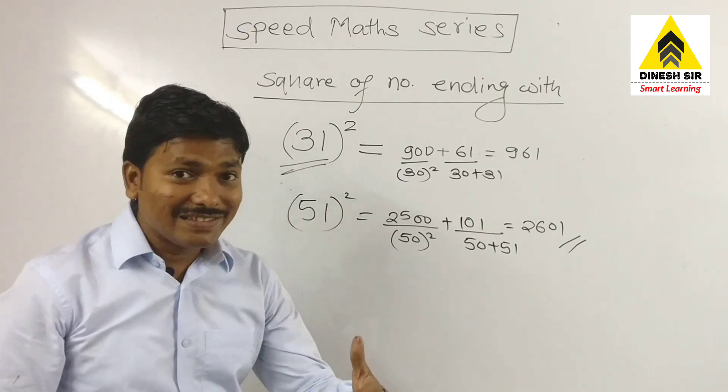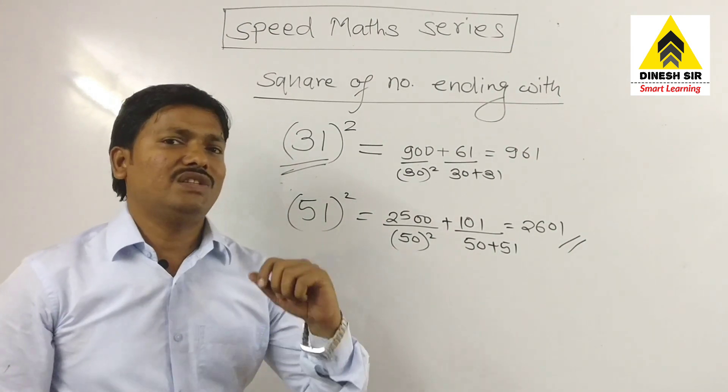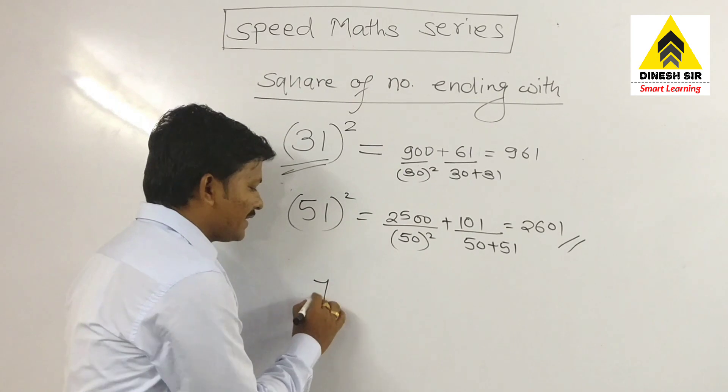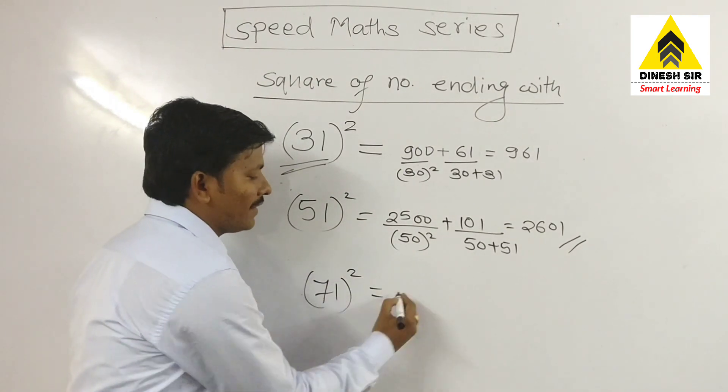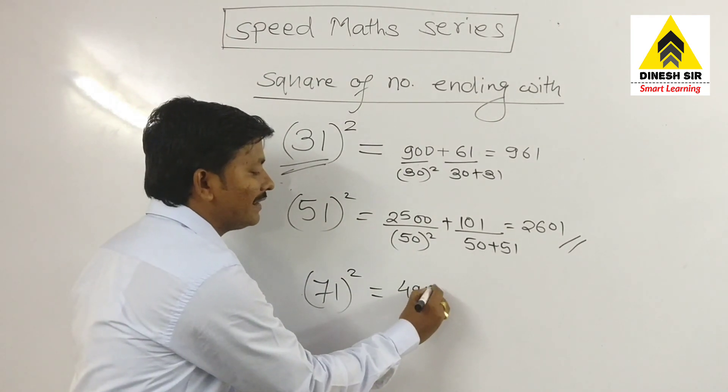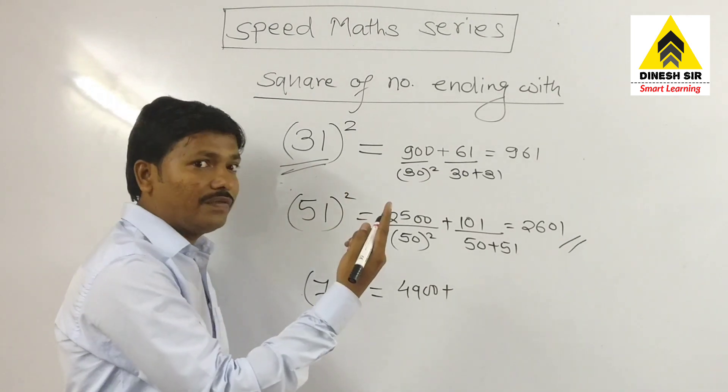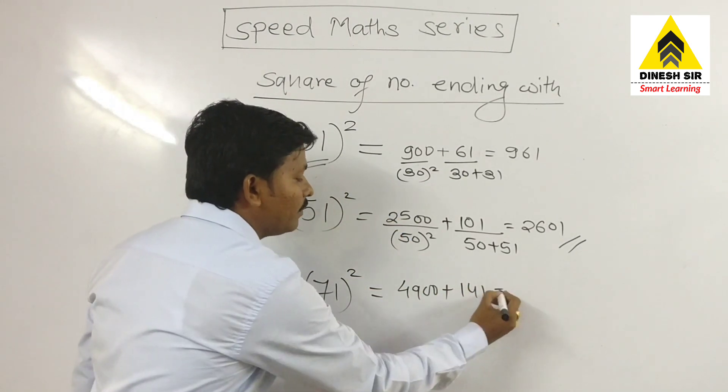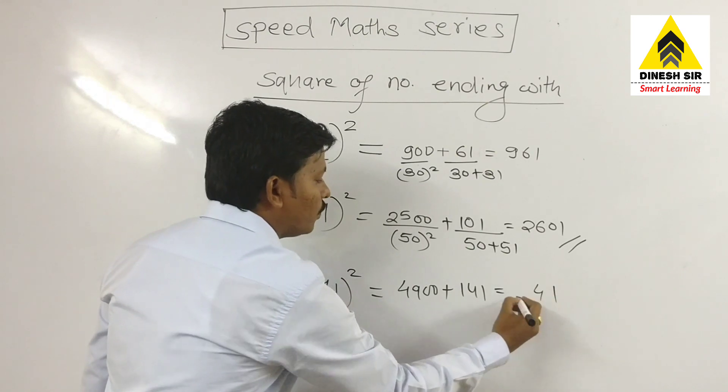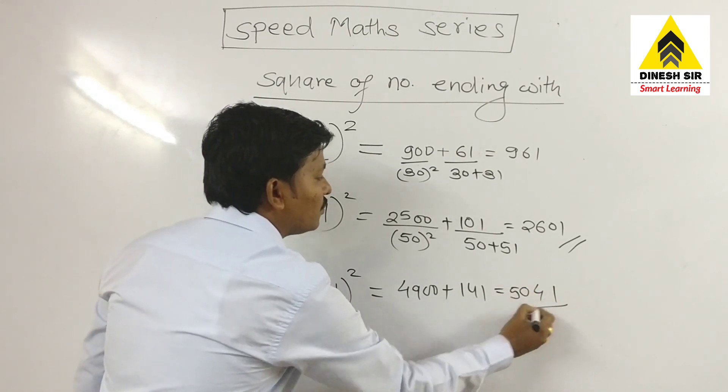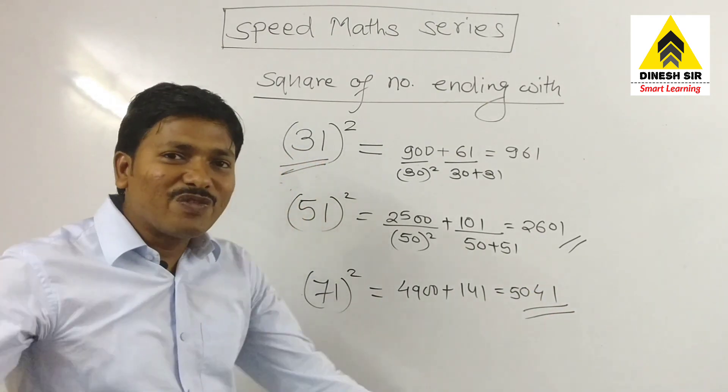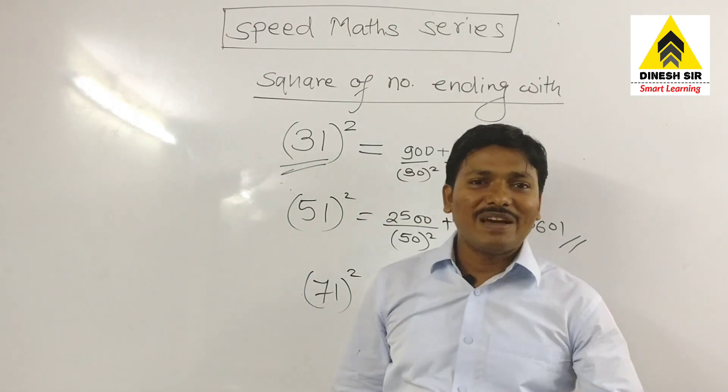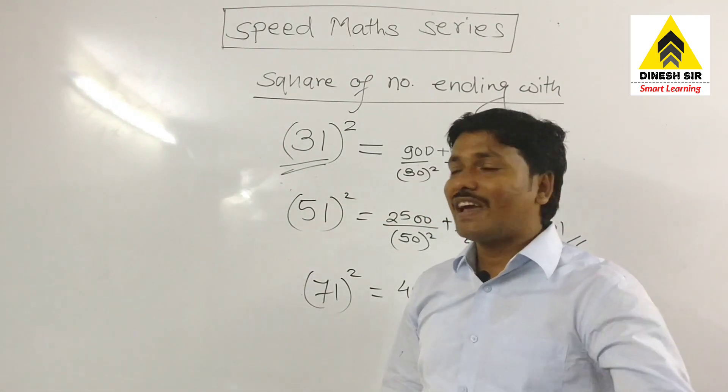This is—I have taken time to explain this, but you can solve this in very few seconds. Seventy-one square: seventy square is forty-nine hundred plus seventeen, seventy-one becomes one forty-one. By adding them I get five zero four one.